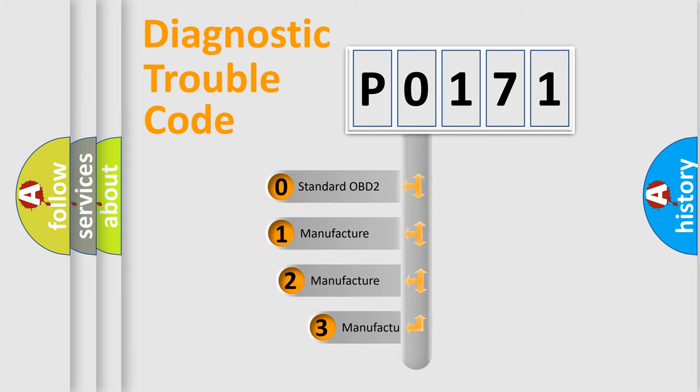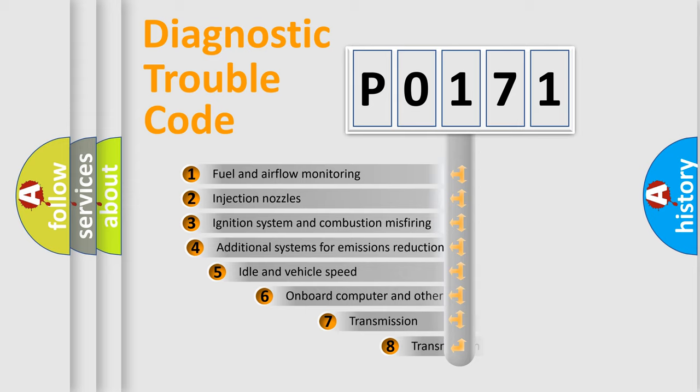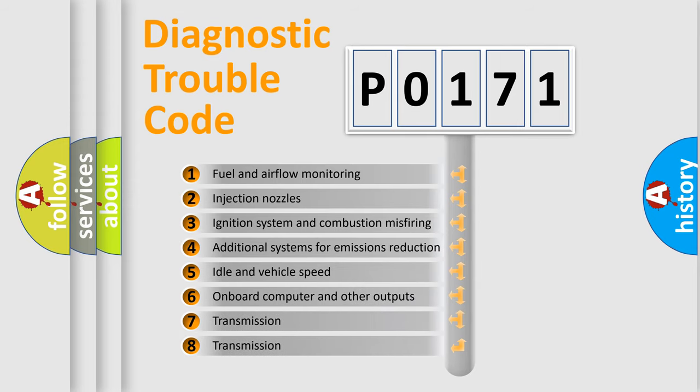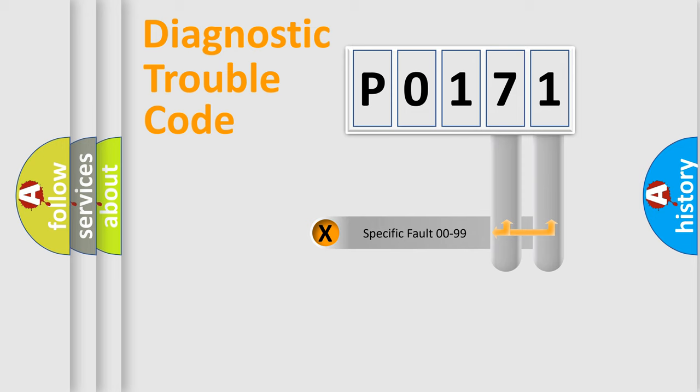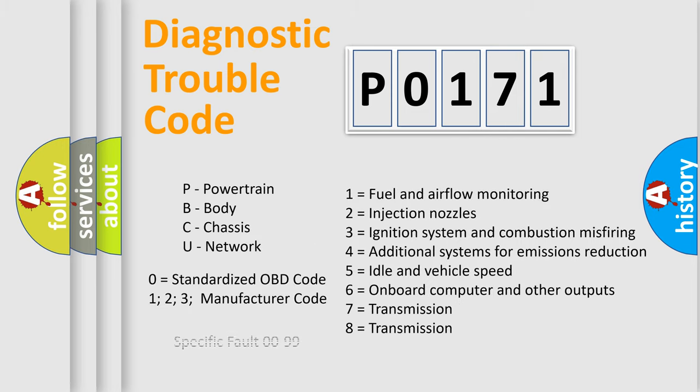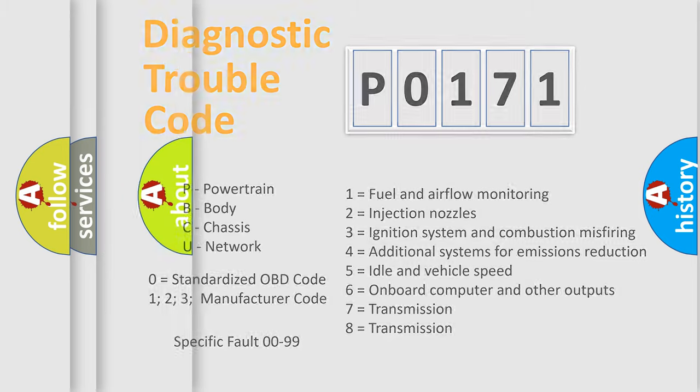If the second character is expressed as zero, it is a standardized error. In the case of numbers 1, 2, or 3, it is a more prestigious expression of the car-specific error. The third character specifies a subset of errors. The distribution shown is valid only for the standardized DTC code. Only the last two characters define the specific fault of the group. Let's not forget that such a division is valid only if the other character code is expressed by the number zero.